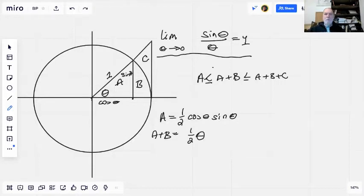This vertical line is the tangent of theta. So a plus b plus c is equal to one half the tangent of theta.